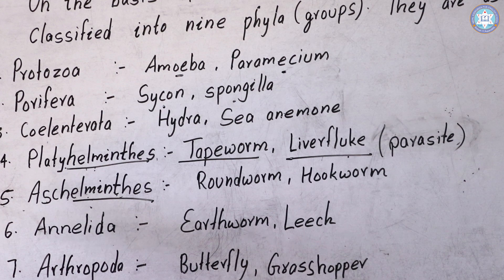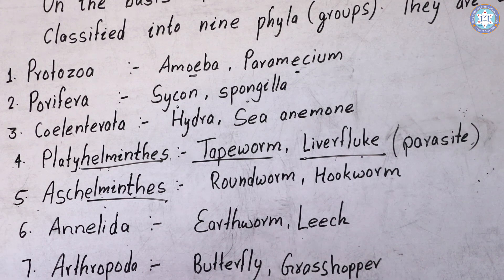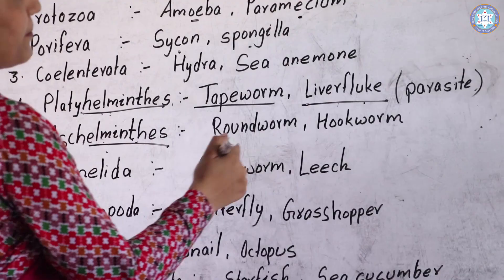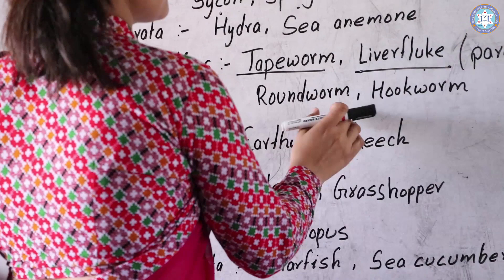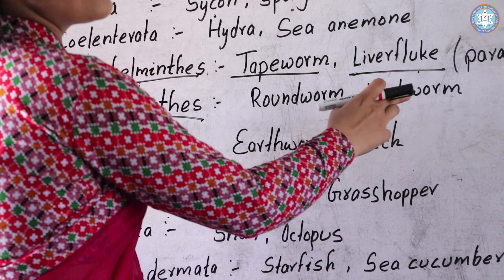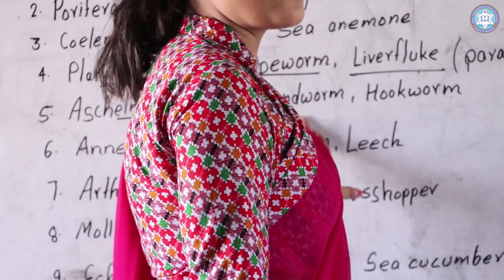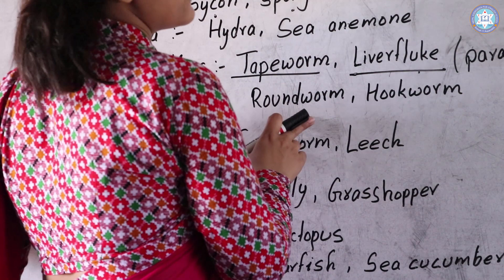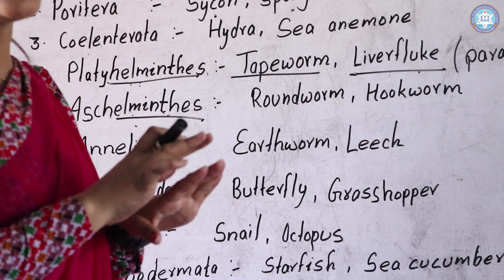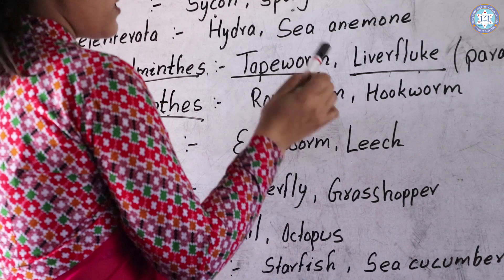The fifth phylum is Aschelminthes, and the examples are Roundworm and Hookworm. They are cylindrical types — similar to Platyhelminthes but slightly different. They are also found inside the intestine of humans or domestic animals, mainly inside sheep. We should always cook meat properly before eating to avoid these parasites.